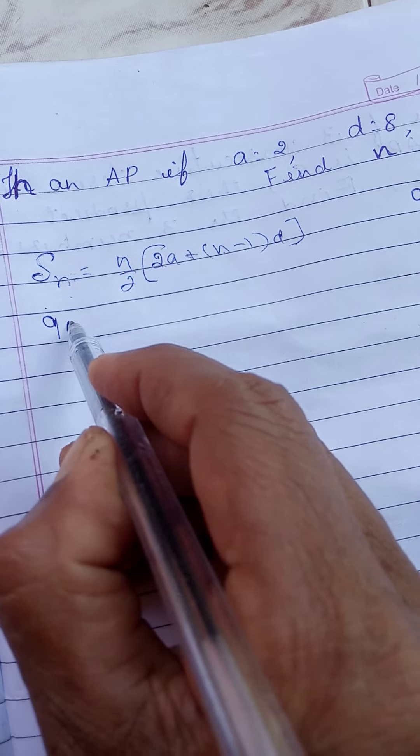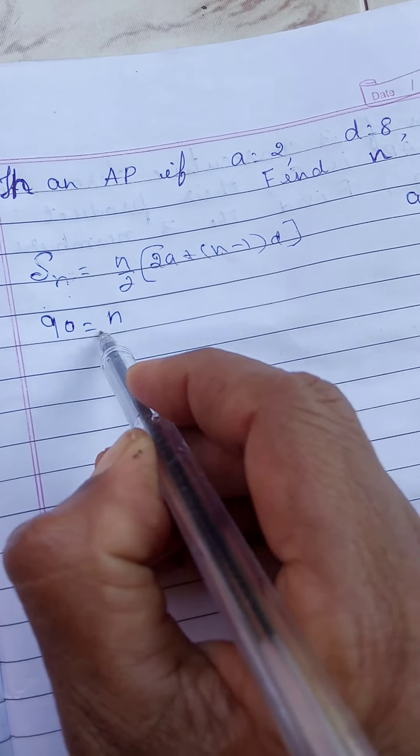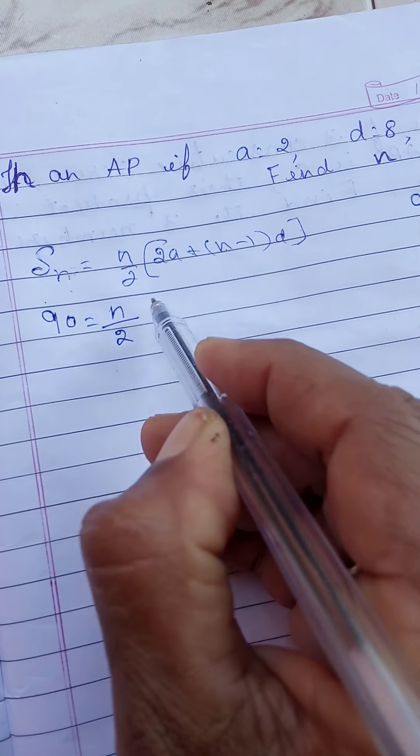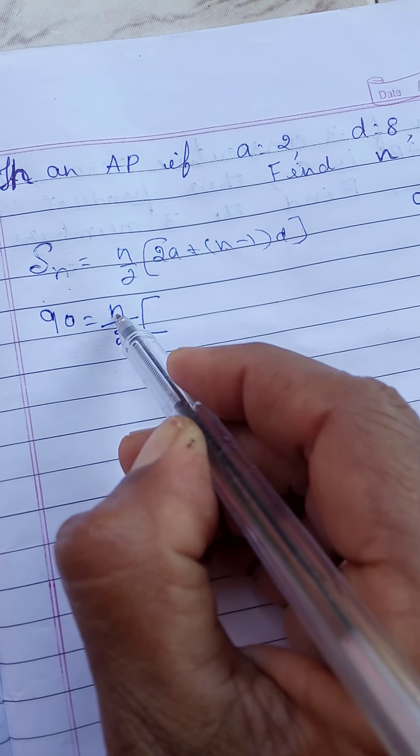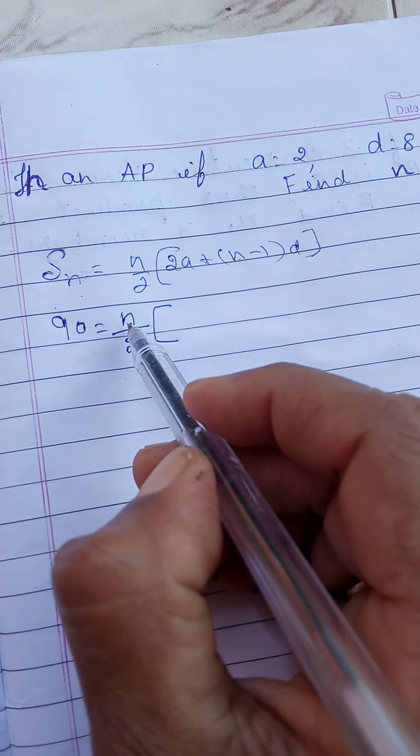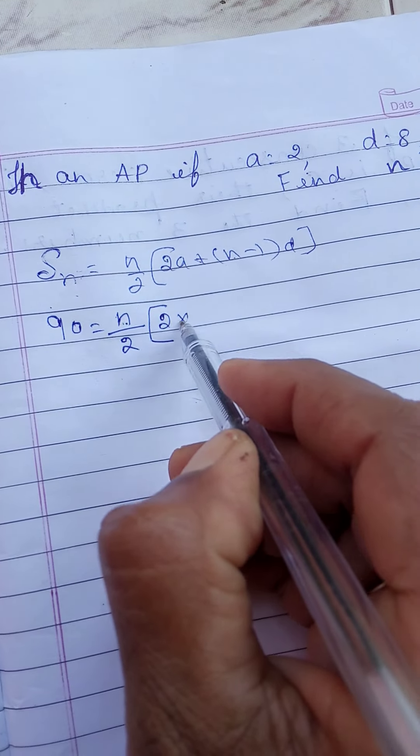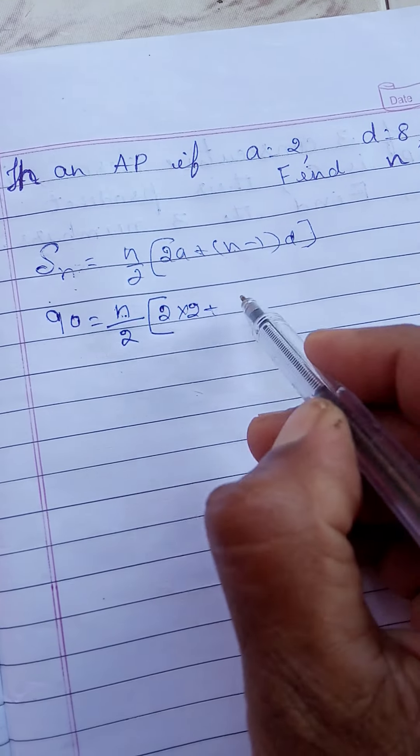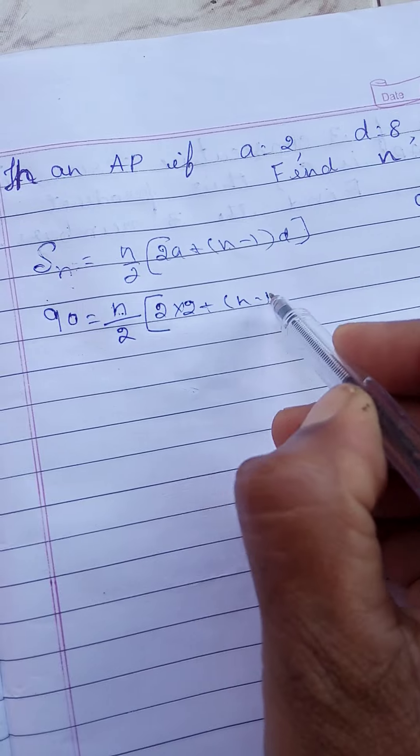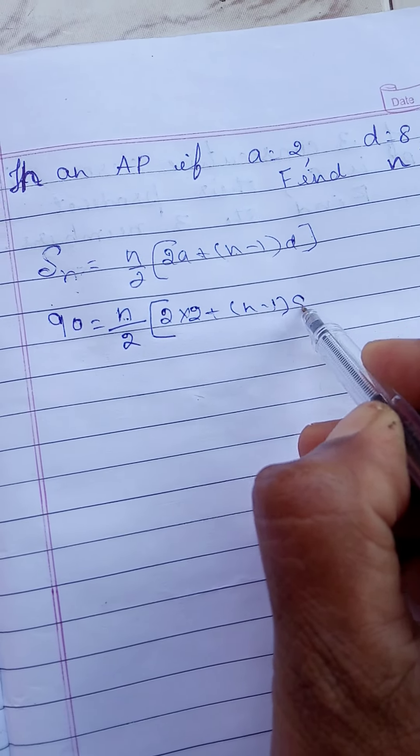Sn is how much? Sn is 90. 90 is equal to n—n is the unknown number, means the number of terms we don't know. We should find out the number of terms. n by 2 into 2 into 2 plus n minus 1 into D, means D is 8.